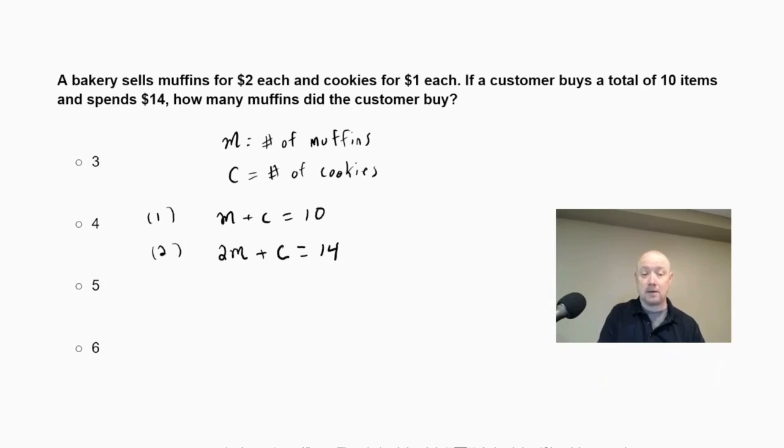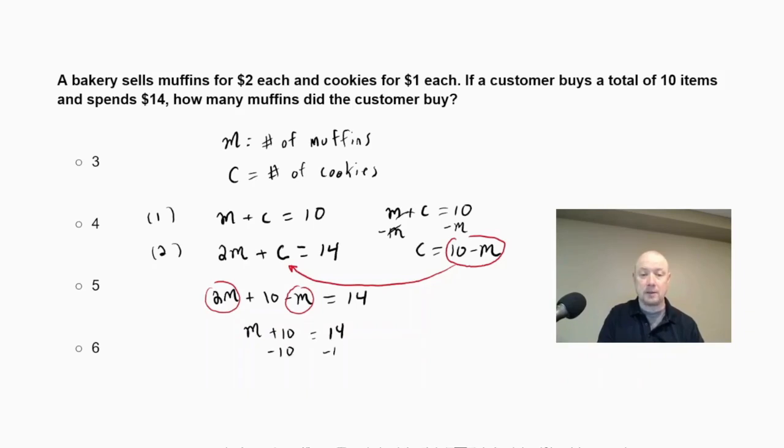If I have m plus c equals 10, I'm going to subtract m from both sides, and I would get c equals 10 minus m, because 10 and m are not like terms, so I can't combine them. Now I'm going to substitute 10 minus m for c in the second equation. I would get 2m plus 10 minus m equals 14, and then to solve this, I'm going to combine my like terms. I have 2m minus m, so that's 1m plus 10 equals 14. To get m by itself, I'm going to subtract 10 from both sides, and I would get m equals 4 muffins.